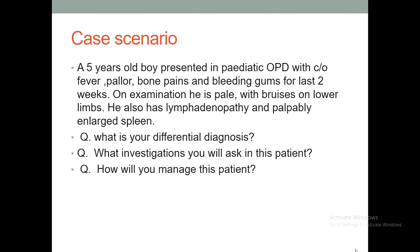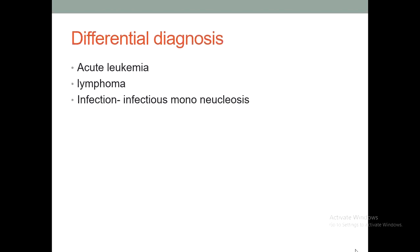Before moving on to other questions, the differential diagnosis of a boy who presents with fever, pallor, bruises, lymphadenopathy, and significant splenomegaly — our differential diagnosis rests upon first and foremost blood malignancy, that is acute leukemia, or more specifically acute lymphoblastic leukemia. Then lymphoma, both Hodgkin and non-Hodgkin. And out of infections, the most common one presenting with lymphadenopathy, hepatosplenomegaly, and fever in a five-year-old is infectious mononucleosis.